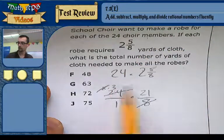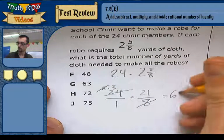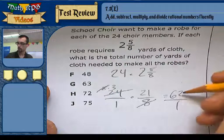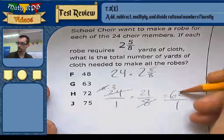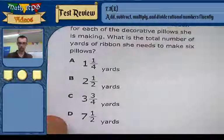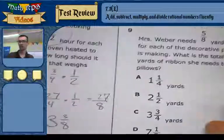And I'm left with 3 times 21, which is 63 over 1. So 63, which is choice G. Alright, we'll do.